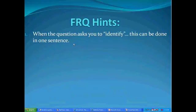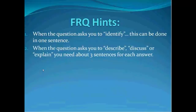When the question asks you to identify something, like 'identify two benefits of dams,' you can do that in one sentence easily. Dams provide hydroelectric power and flood control — period, move on. But a lot of times they don't ask that. A lot of times they ask you to describe, discuss, or explain, and you cannot describe, discuss, or explain a dam in one sentence.